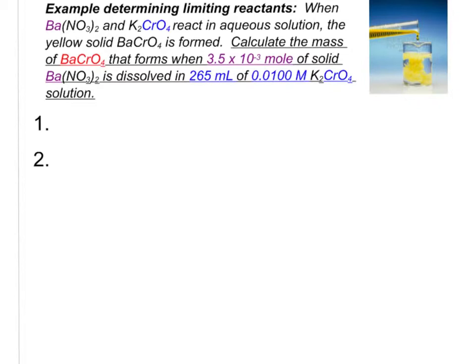Let's try a different example — this one is a little bit more complicated because we are going to need to also calculate the limiting reactant. We're going to be using all of these new concepts and going back to our limiting reactant idea. When barium nitrate and potassium chromate react in aqueous solution, the yellow solid barium chromate precipitate is formed. Calculate the mass of barium chromate that forms when 3.5 times 10 to the negative third moles of solid barium nitrate are dissolved in 265 milliliters of 0.0100 molar potassium chromate solution.